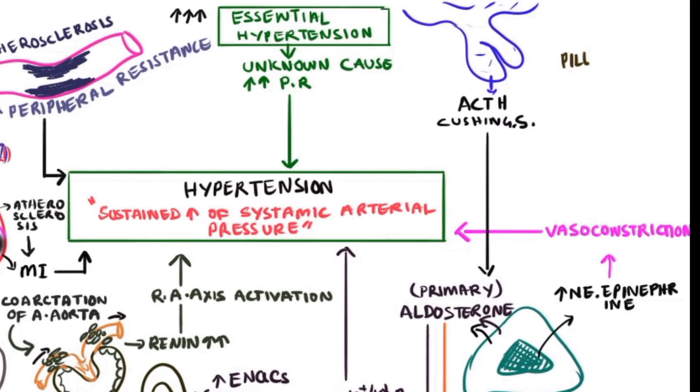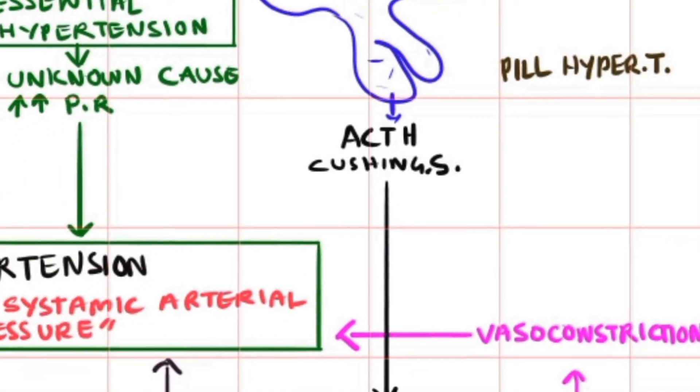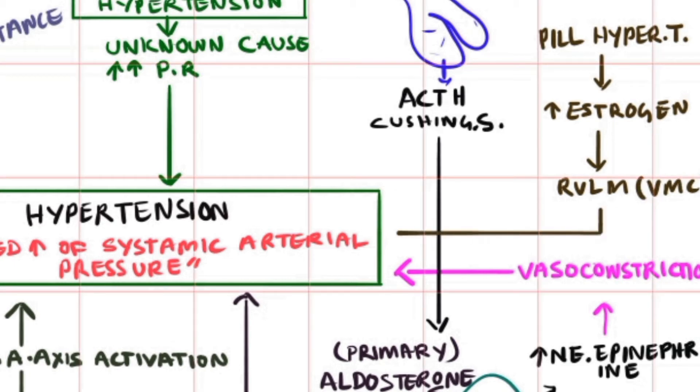Pill hypertension is seen in populations who excessively use contraceptive pills, where elevated estrogen levels in the body may stimulate the RVLM, the rostroventrolateral medulla of the vasomotor center, leading to sustained elevation of BP and further hypertension.